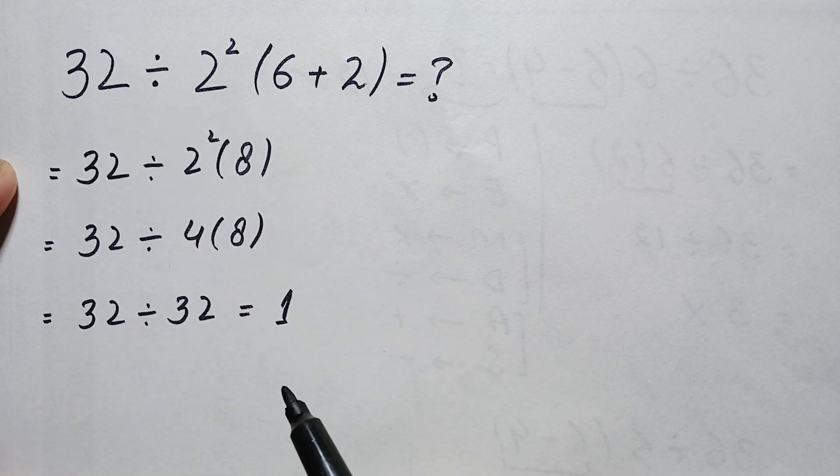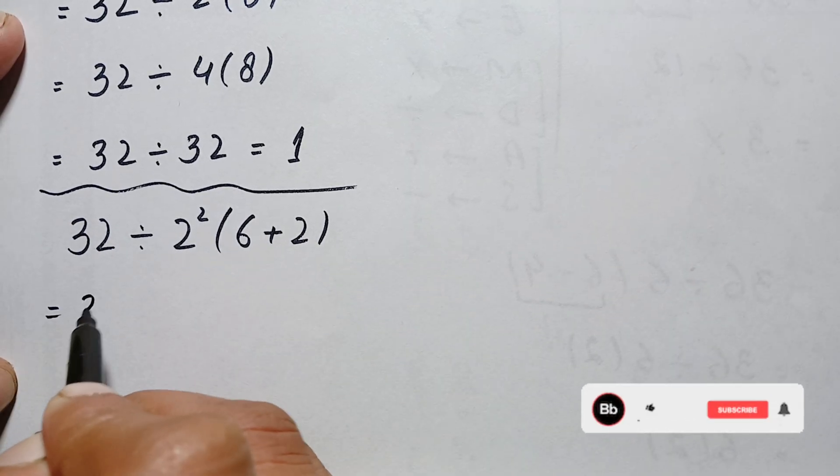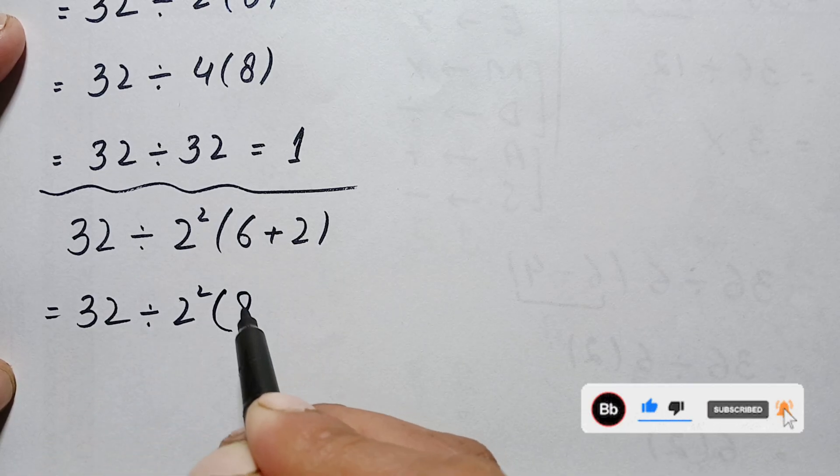So this will become 6 plus 2, which is simply 8. So this will become 32 divided by 2 squared, and this is 8.